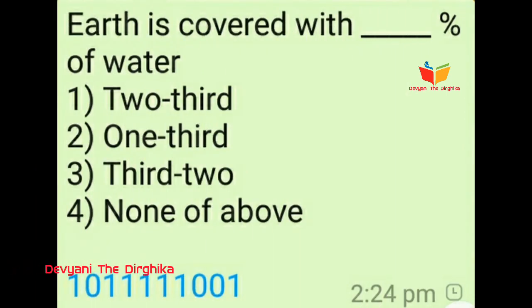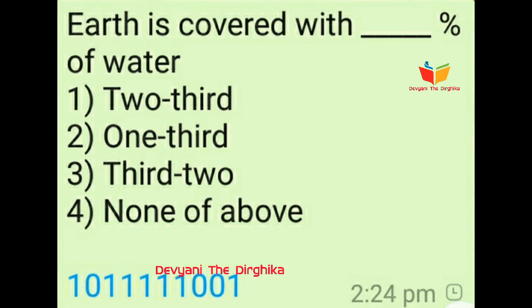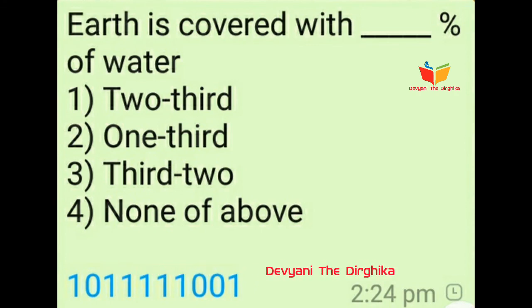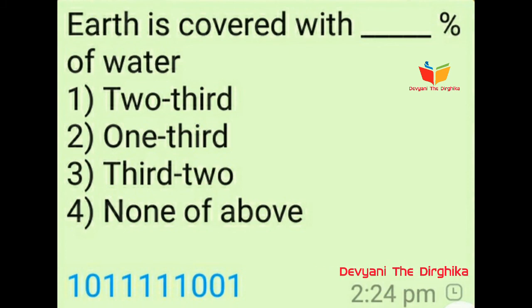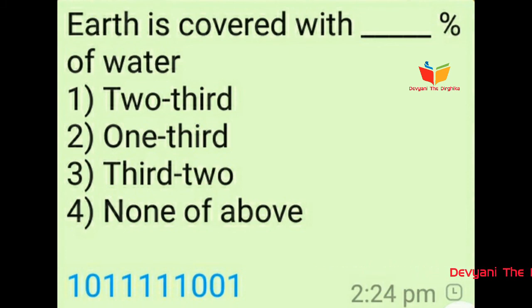Question number eleven: Earth is covered with dash-dash percent of water. Option number one is two-third, option number two is one-third, option number three is third-two, and option number four is none of the above. The answer is option number one, two-third.